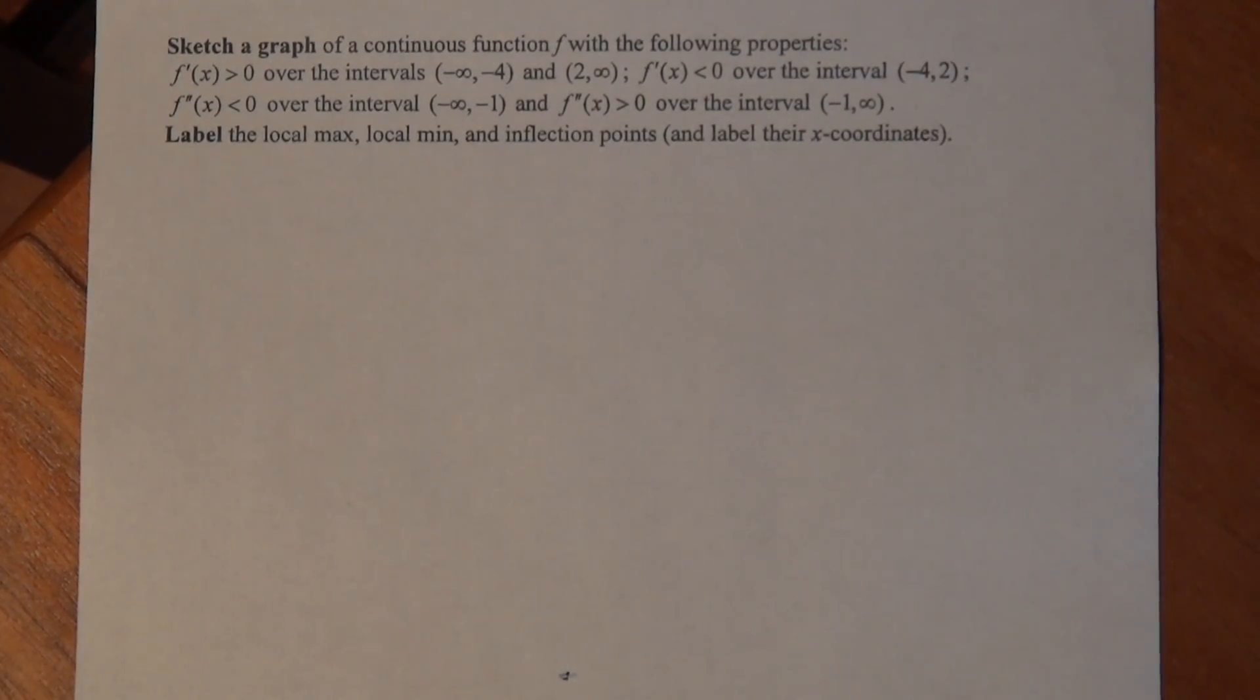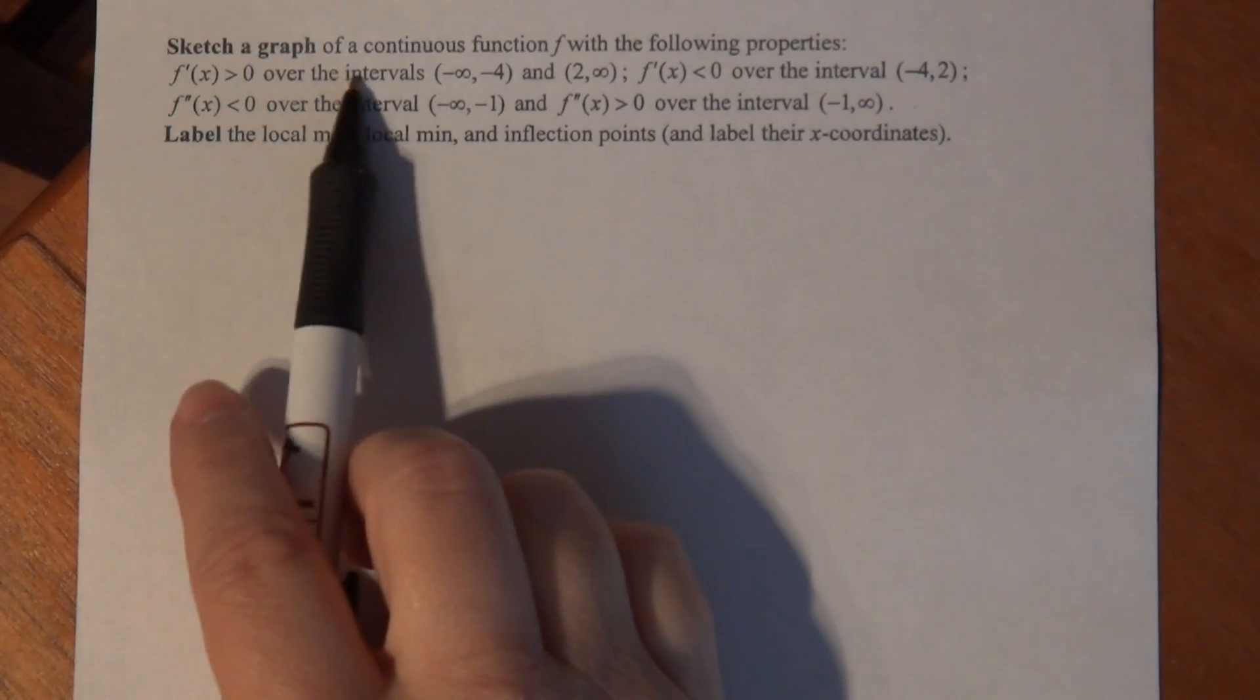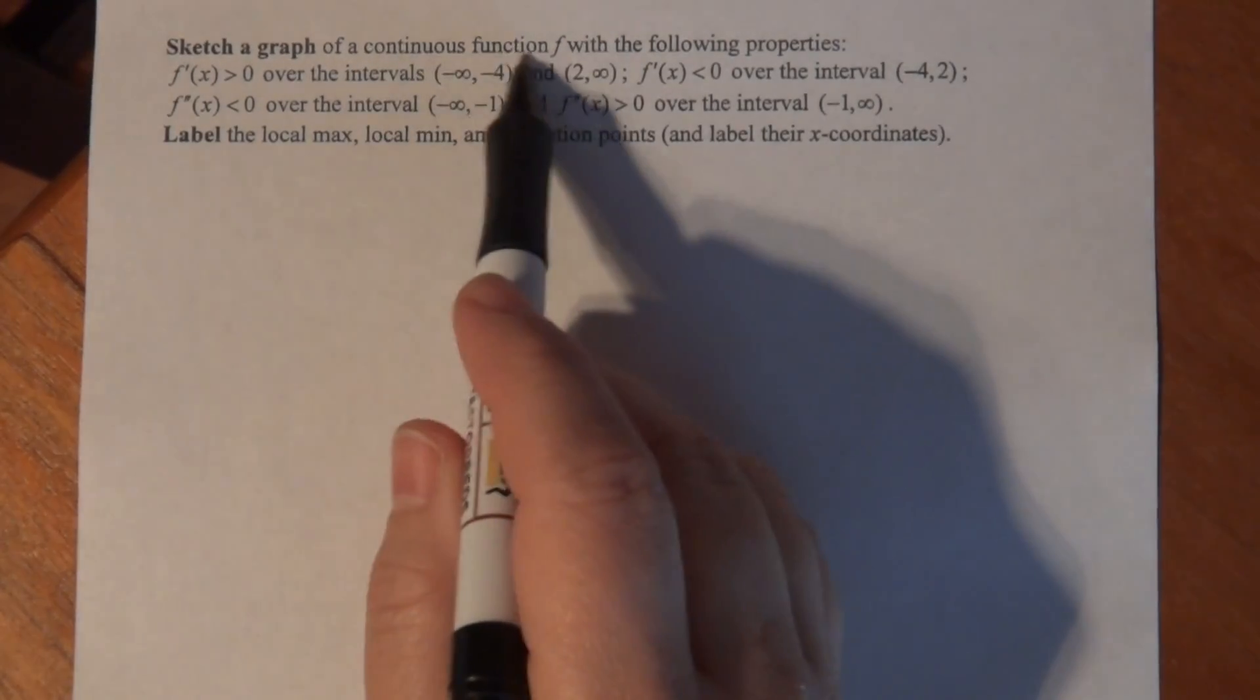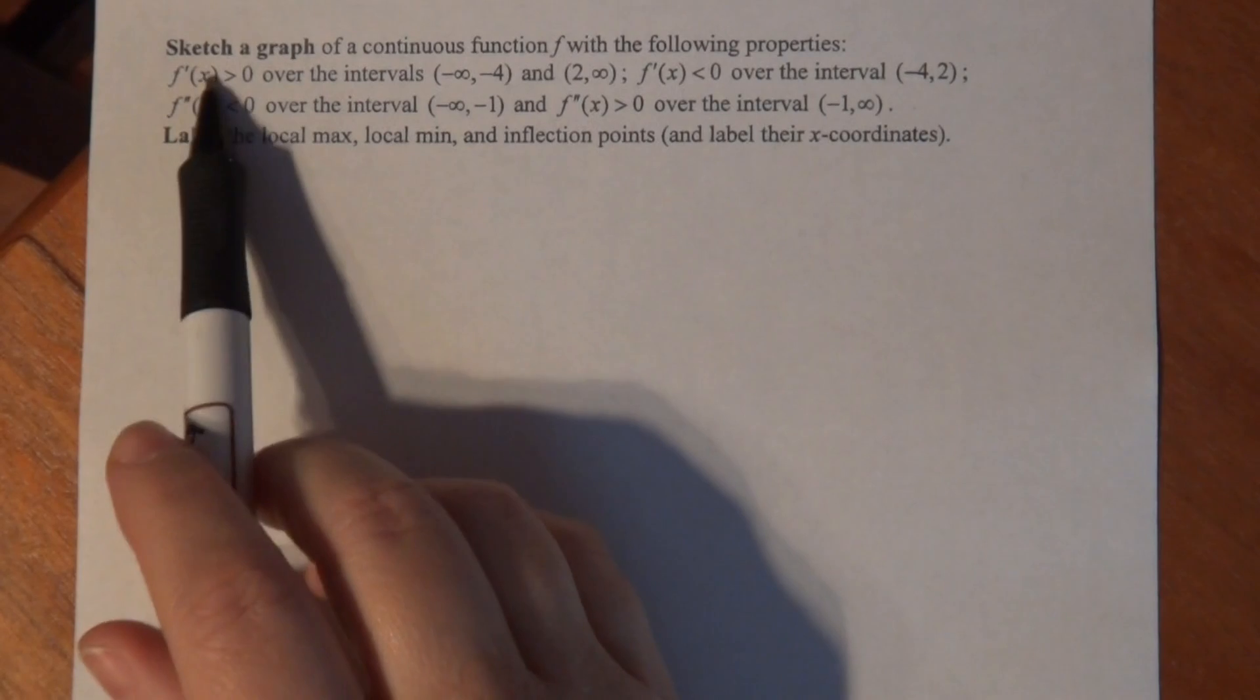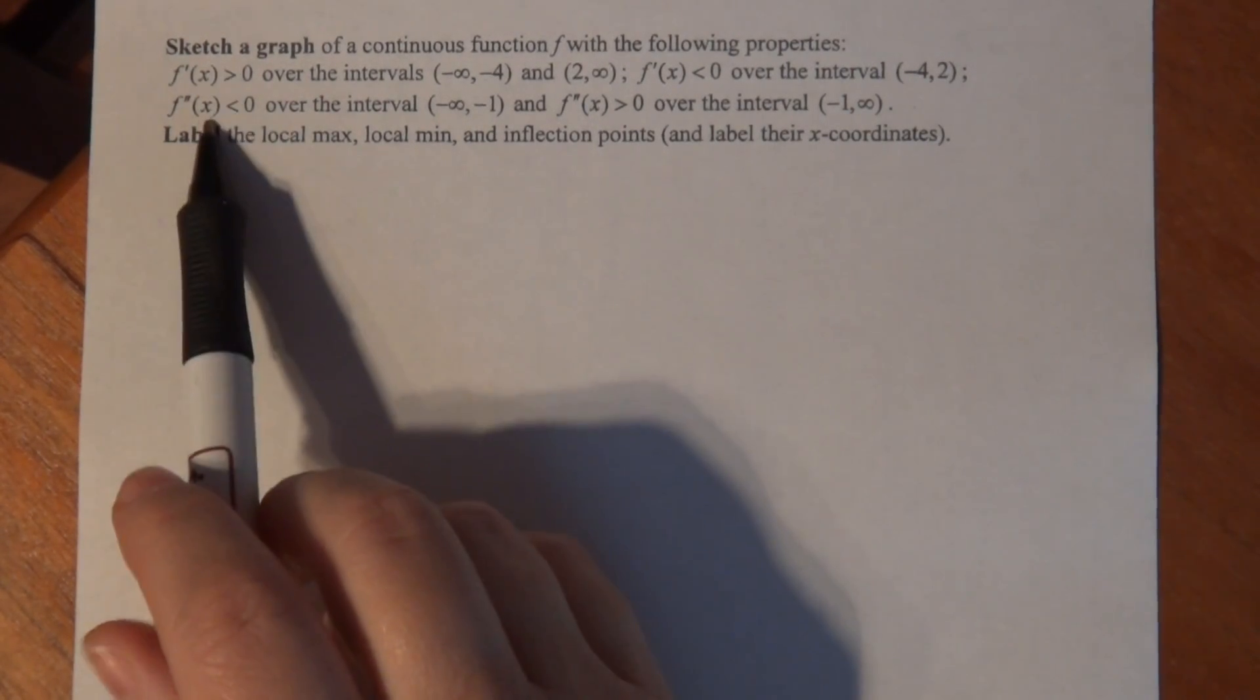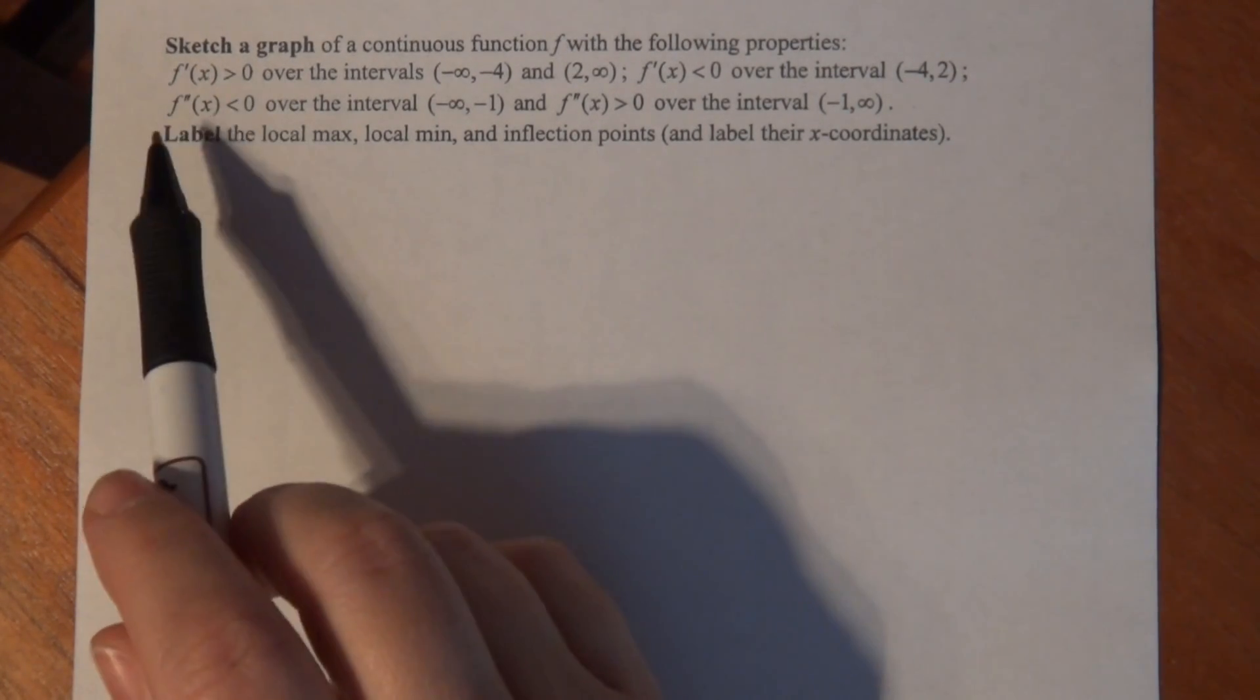This is a graphing problem where we're supposed to sketch a graph of a continuous function called f with the following properties. Now notice the properties that were given about f or regarding f have to do with the first and second derivative only.